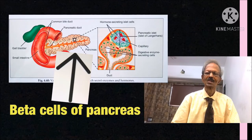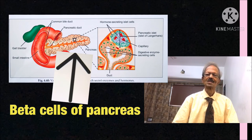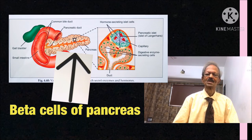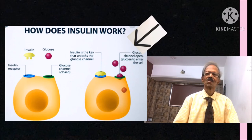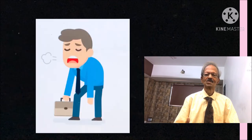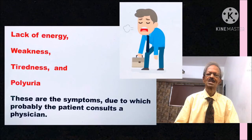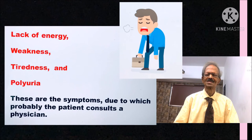One simple example is when beta cells of the pancreas produce less insulin, cells of the body are not able to use glucose for energy. From the figure, you can understand how insulin acts as a key to open cell receptors for glucose molecules. Due to the lack of glucose supply to cells, the person becomes weak, tired, and starts excreting more urine due to a large amount of glucose in the urine.